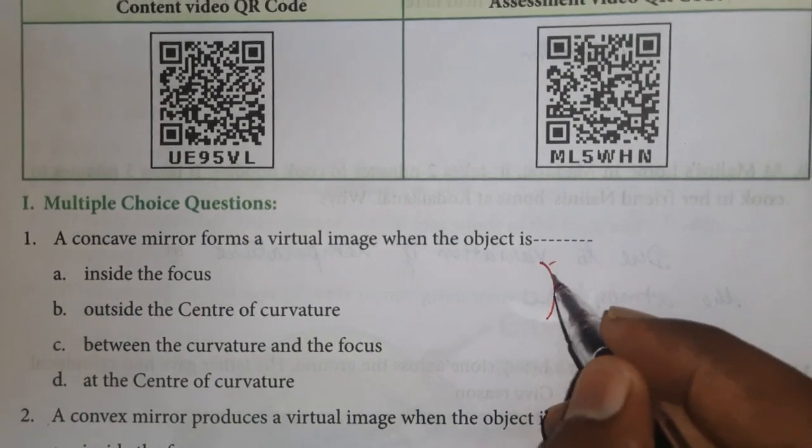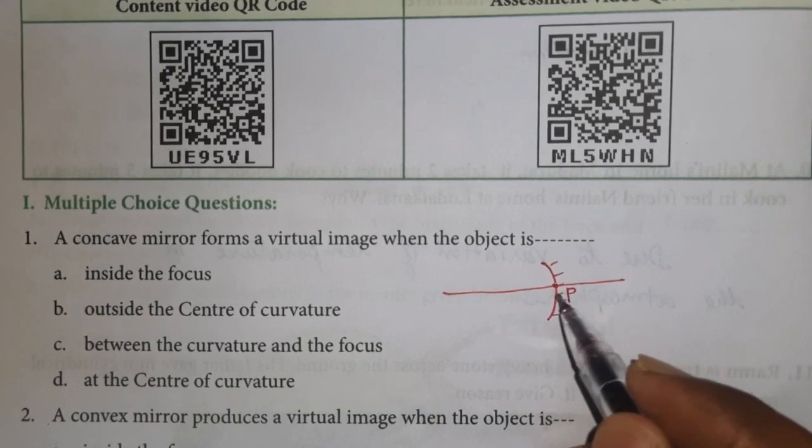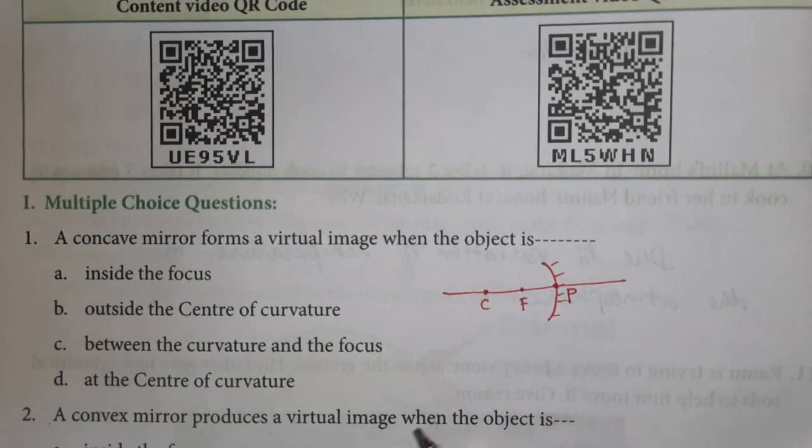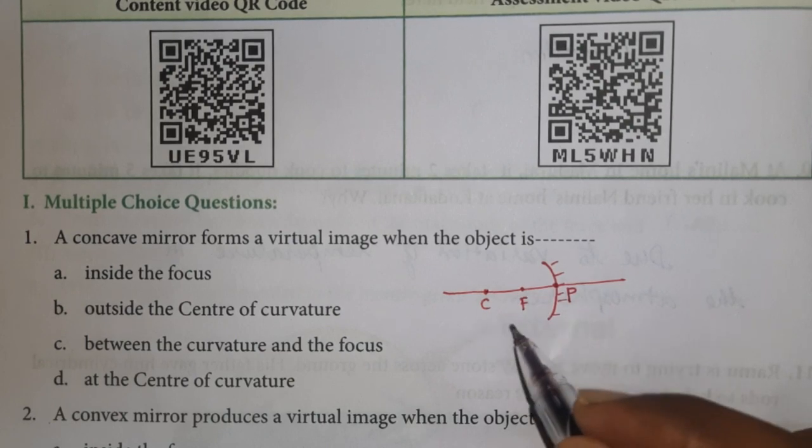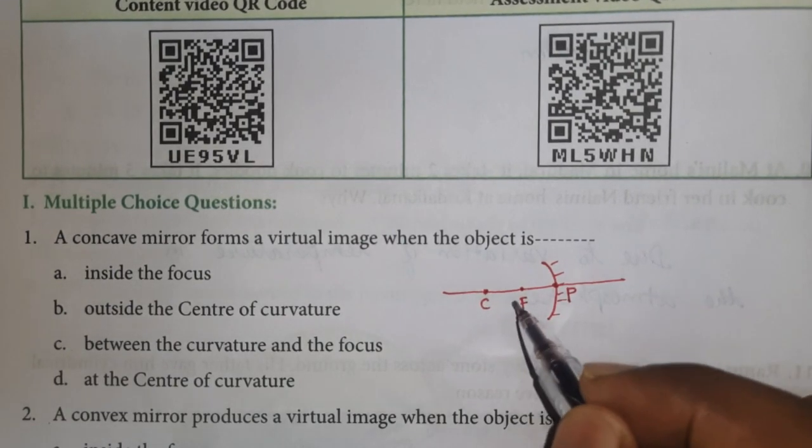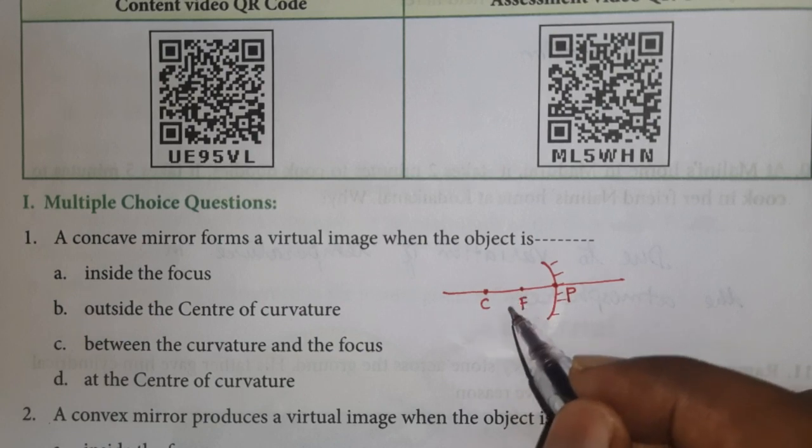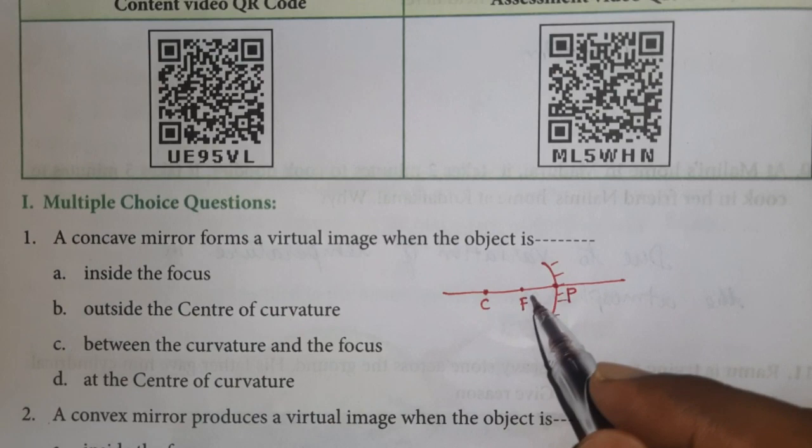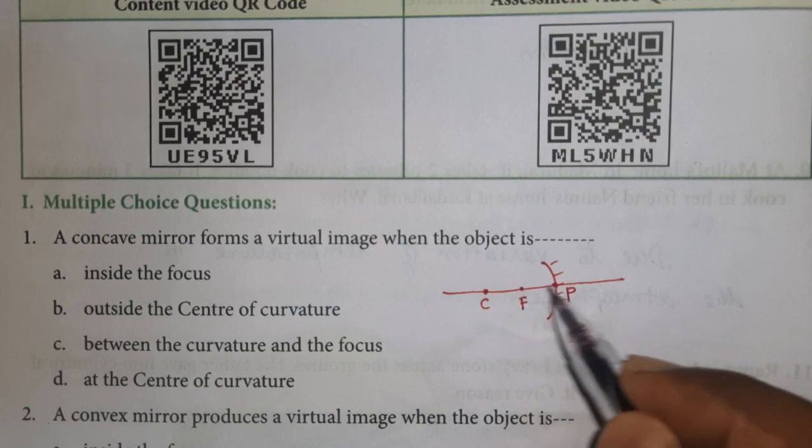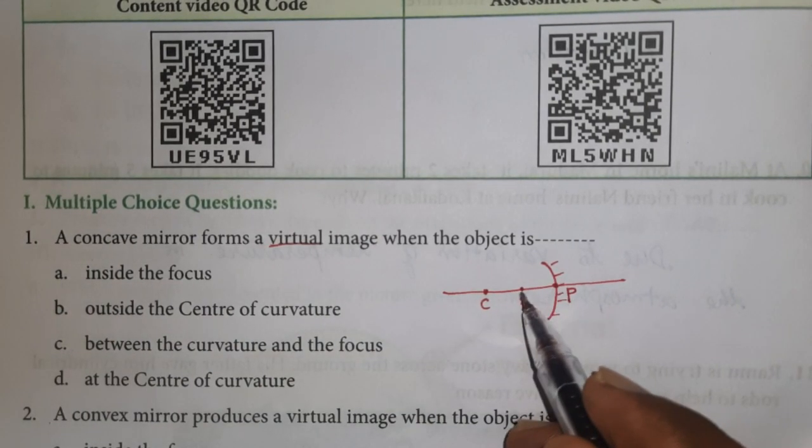Consider this a concave mirror. This is a concave mirror with principal axis and pole. P is the pole, F is the central focus, C is the center of curvature. If you have an object, the image will be formed. So we have to place the object inside the focus.